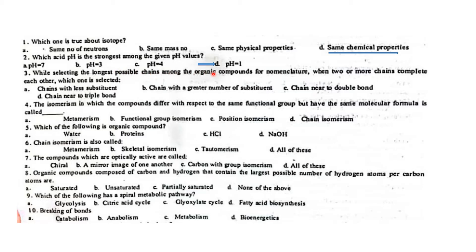While selecting the longest possible chain in an organic compound for nomenclature, when two or more chains compete with each other, which one is selected? The chain nearer to the double bond is selected — consider the chain with the double bond.